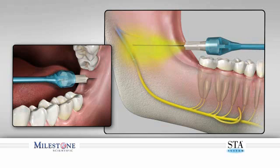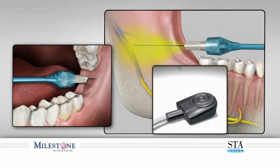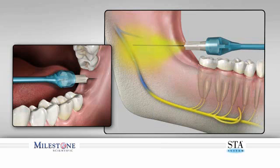Once at your target site, perform an aspiration by depressing and releasing the foot control. If the aspiration is negative, continue the injection. If aspiration is positive, reposition the needle and repeat aspiration by depressing and releasing the foot control pedal again until a negative aspiration is obtained.